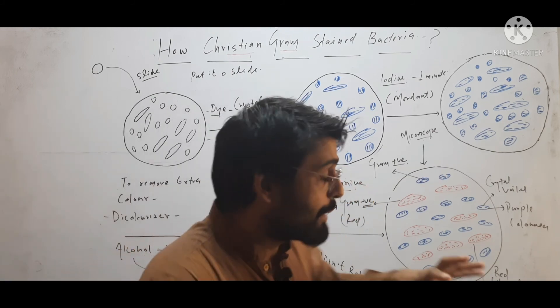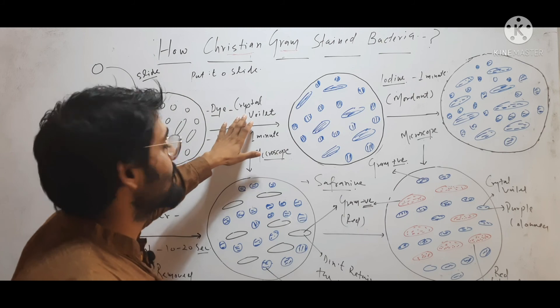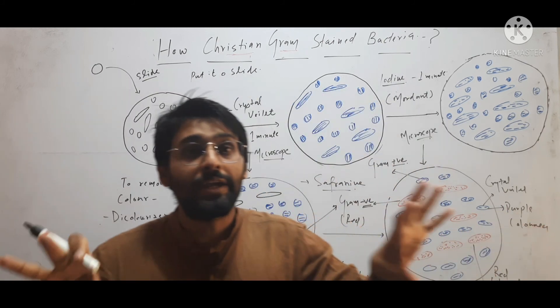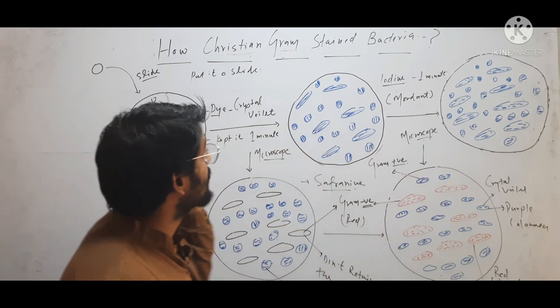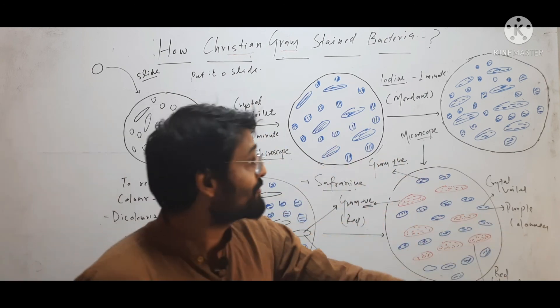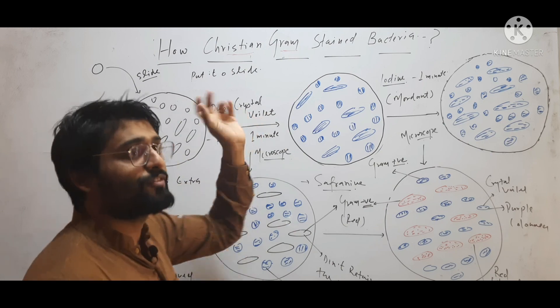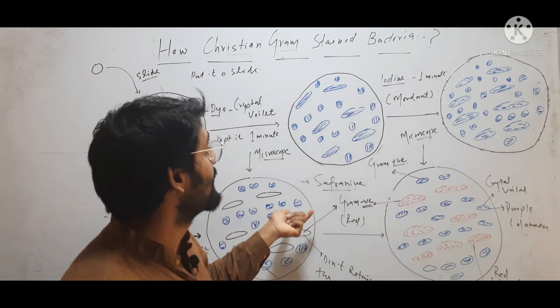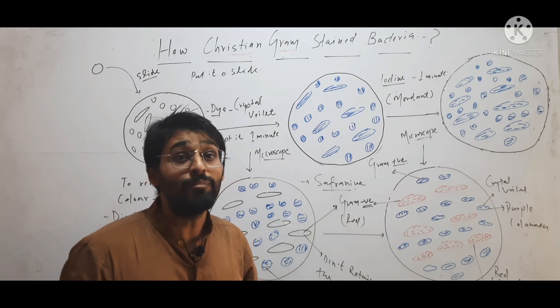By applying this dye, that is crystal violet, he differentiated and classified bacteria into two groups: gram positive and gram negative. The bacteria which retained crystal violet dye were gram positive, and bacterial cells that did not retain crystal violet dye were gram negative.